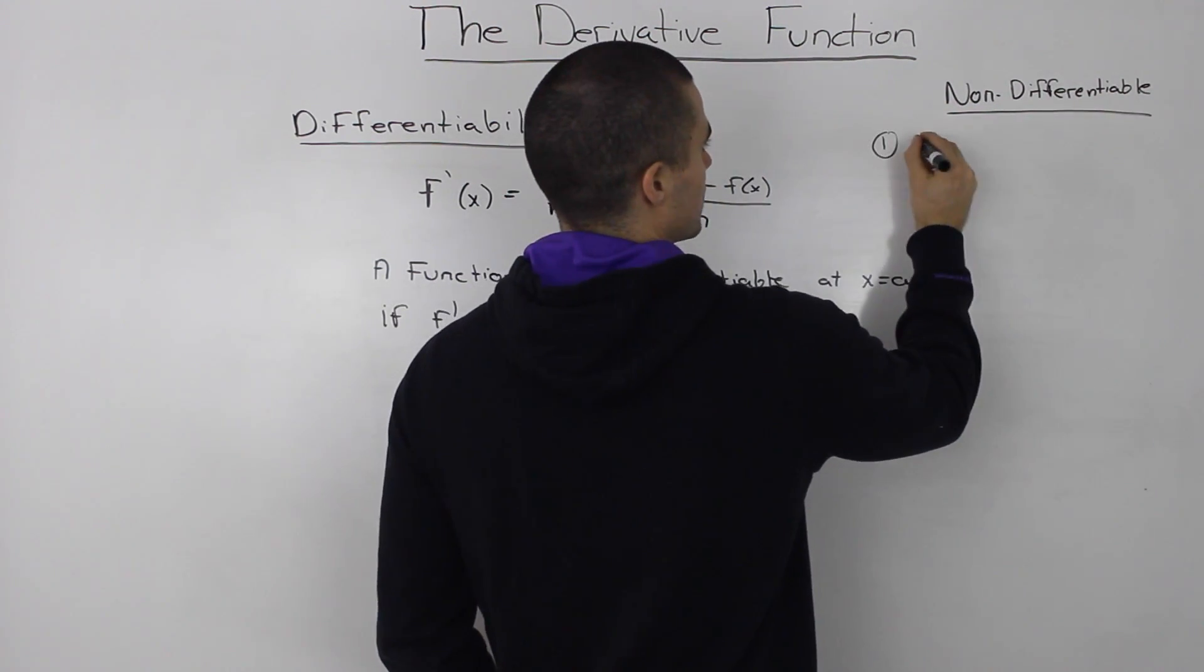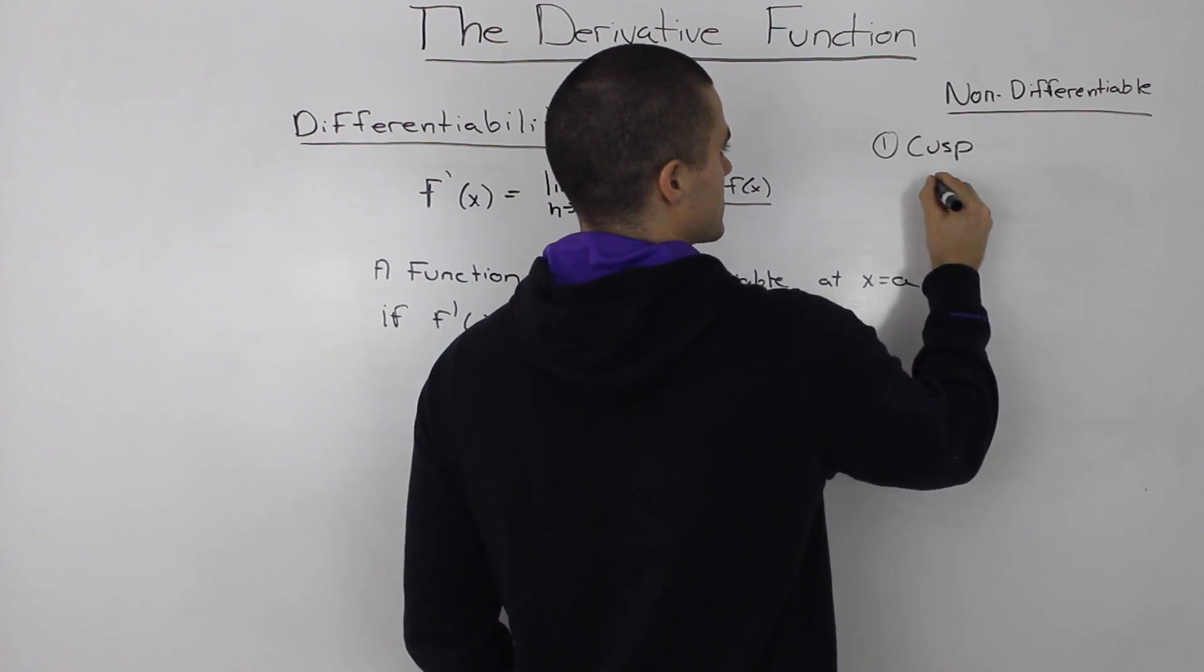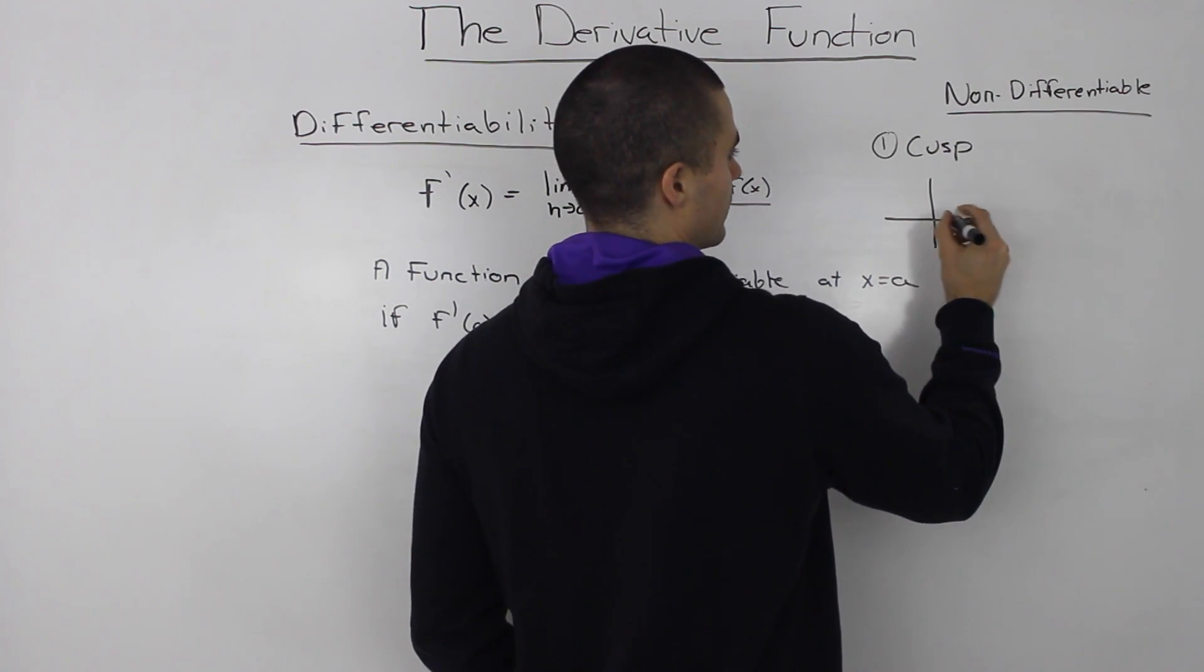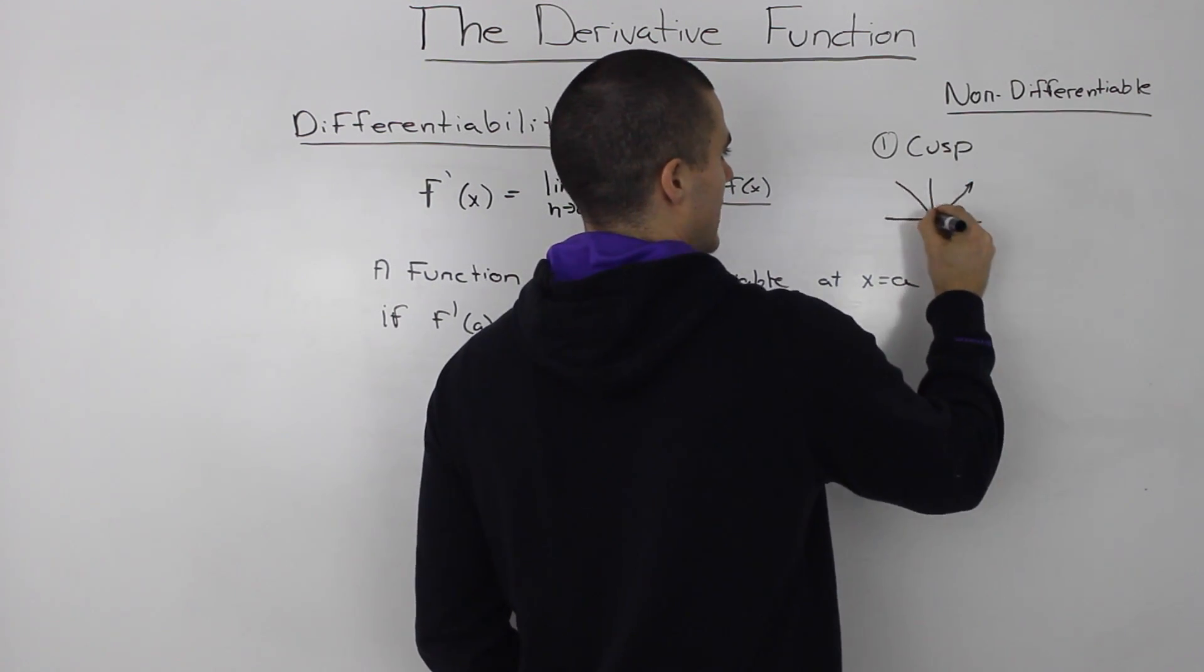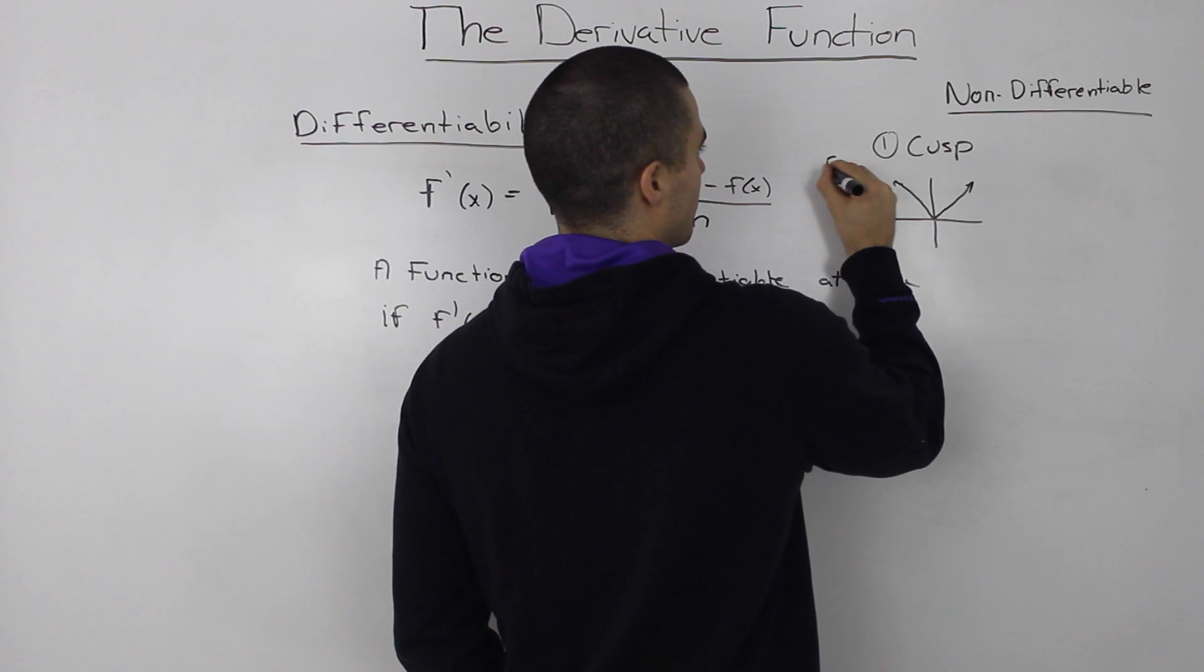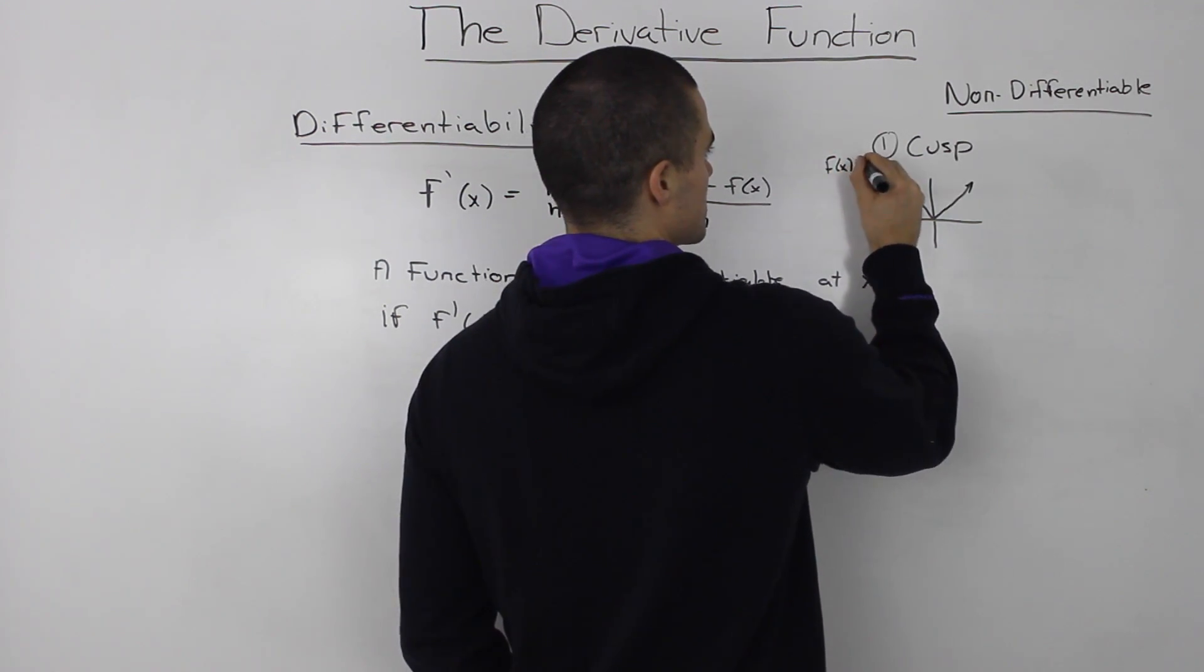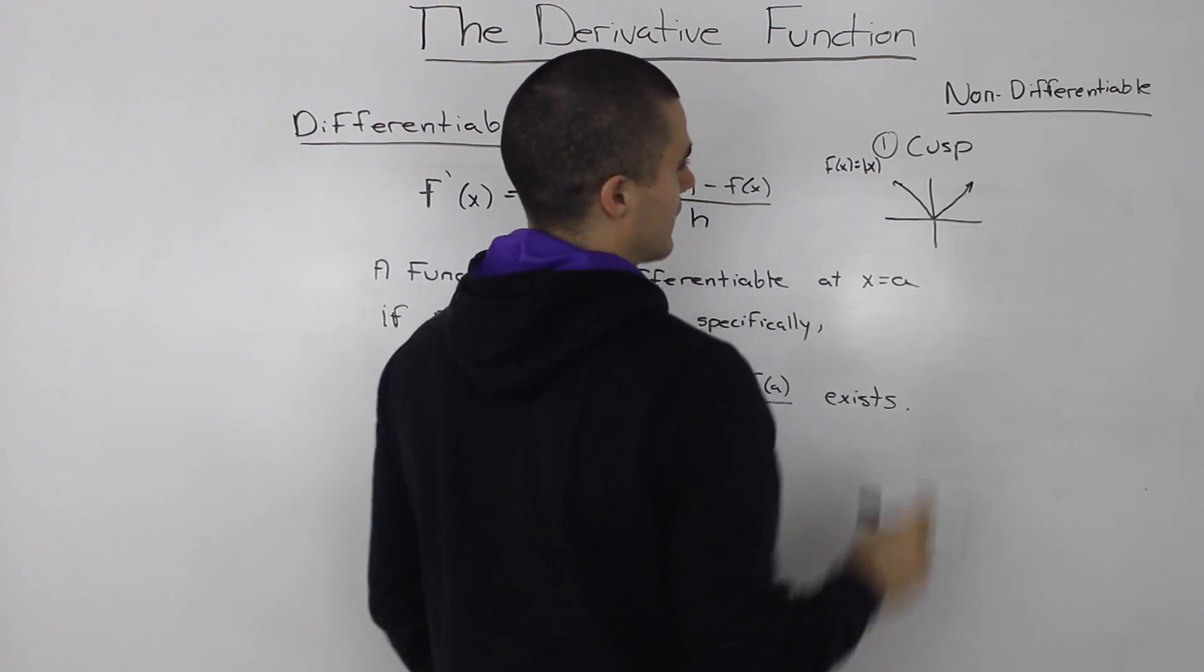So the first way is that a function can have something called a cusp. The best example of that is an absolute value function, so f(x) equals absolute value x.